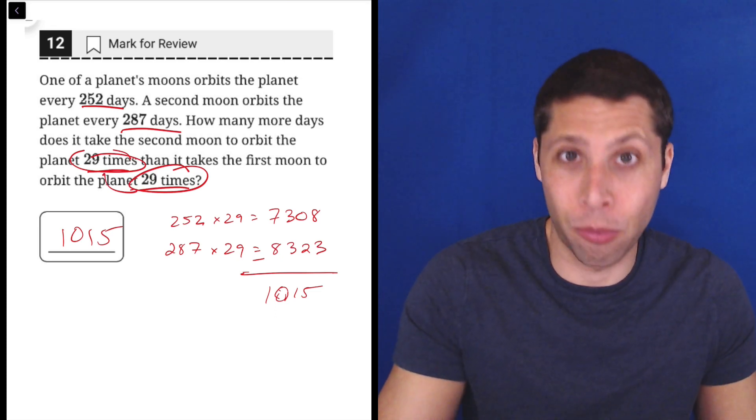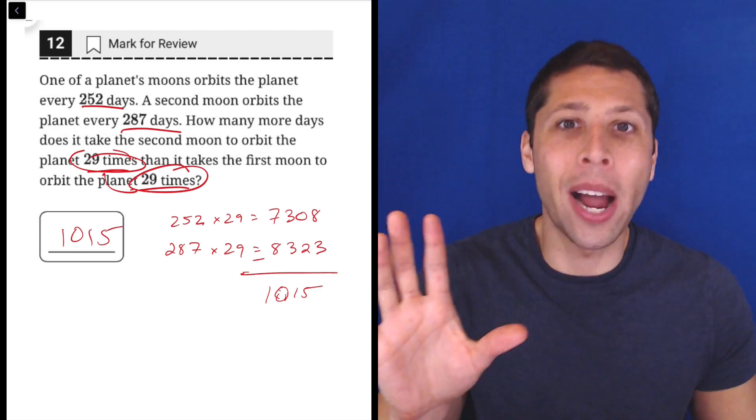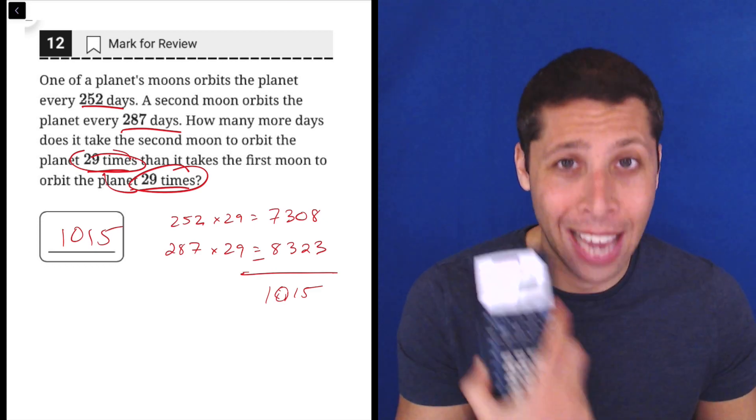You only get points for getting it right, and so I would say here just be simple and just get it right by literally doing multiplication and subtraction in a calculator.